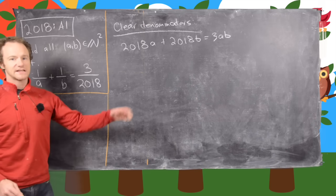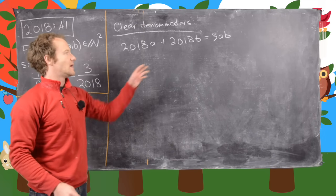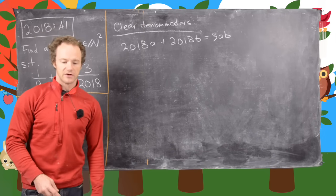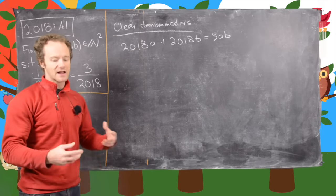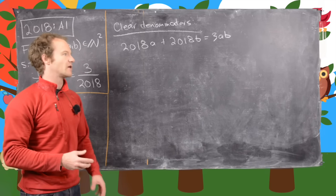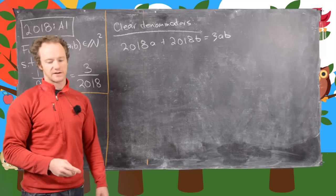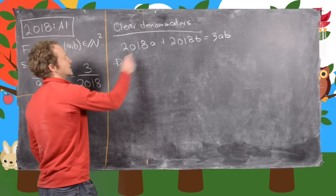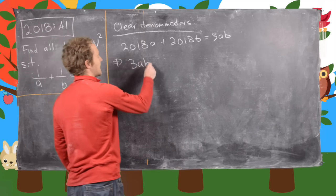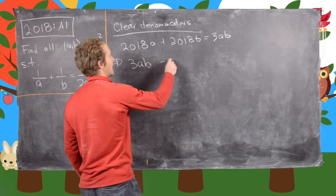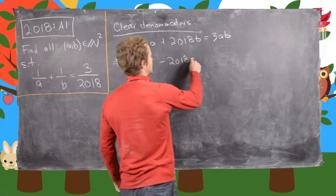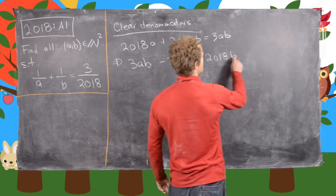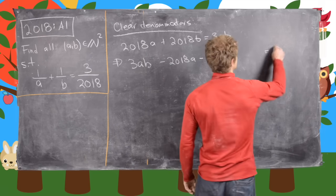Now the next thing I want to do is move everything over and turn this into something that we can factor — it's like completing the square, but really we're completing a product of a binomial. So let's rewrite this as 3AB − 2018A − 2018B = 0.